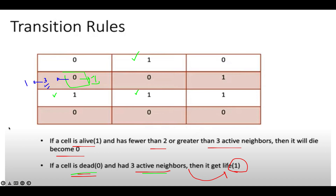Similarly, consider this particular cell which has only one active neighbor. If a cell is alive and has fewer than two active neighbors, then it should become zero. So we can't directly make this cell zero — we should bring in a transitory state. Let's introduce minus two here. Minus two will act as a transitory state. And once we are done with the processing of the entire grid, we'll finally update and replace all minus twos by zero.